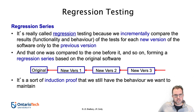Now, what are some examples of observable artifacts? Anyone have any ideas? One suggestion was UML diagrams.